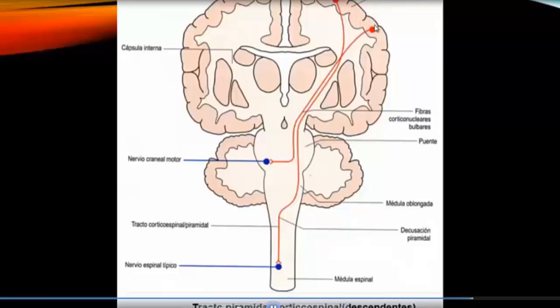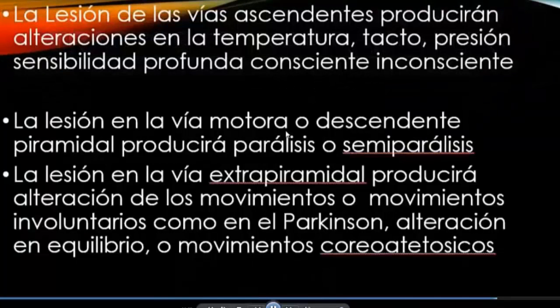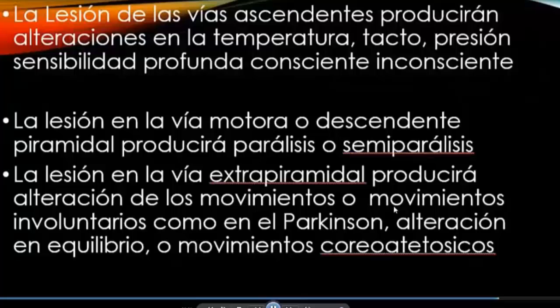Here we have the corticospinal pathway and the corticonuclear pathway, and the corticopontocerebellar pathway would be missing. This corticonuclear shows the first neuron and the second neuron. The extrapyramidal comes from the basal nuclei, from the nuclei found in the brain stem, and from the cerebellum.